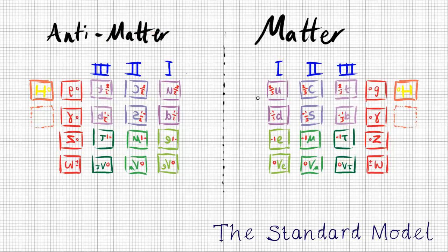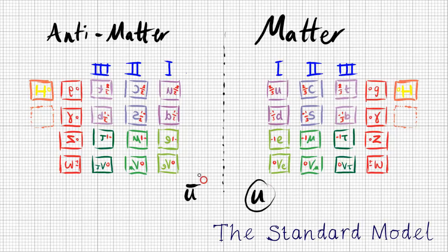The notation for matter and antimatter is as follows: for example, 'u' is an up quark, and its antimatter equivalent, the anti-up quark, has a little bar over the top. Similarly, 'd' would be a down quark and anti-d would be an anti-down quark.